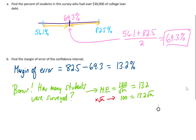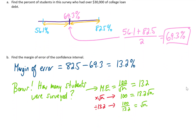In the next step, we divide both sides of the equation by 13.2. That gives us the square root of n by itself, and on the left side we have 100 over 13.2. Plugging that into my calculator gives me 7.5757. Now to get n by itself, we just need to square both sides of the equation. That gives us 7.5757 squared on the left side and n by itself on the right side. I'm getting an n value of 57.4, which I will round to 57 surveyed.